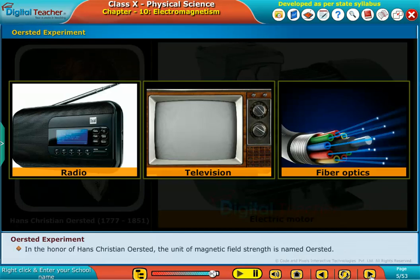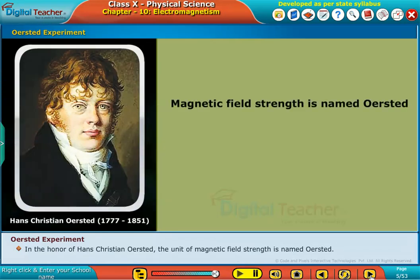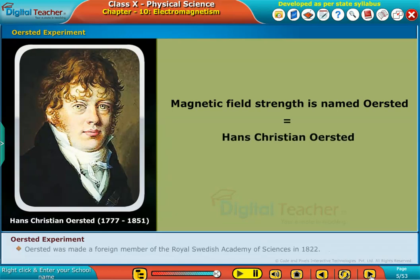In the honor of Hans Christian Oersted, the unit of magnetic field strength is named Oersted. Oersted was made a foreign member of the Royal Swedish Academy of Sciences in 1822.